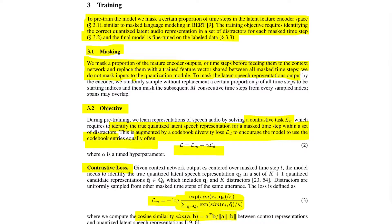The training objective is a contrastive task LM used to identify the true quantized latent speech representation for a masked timestamp within a set of distractors. They also use a diversity loss LD that tries to encourage the model to use the codebook entries equally often. The overall loss is composed of two terms: the contrastive task LM and the diversity loss LD, with a hyperparameter alpha controlling how much diversity loss to add.